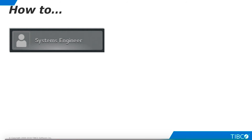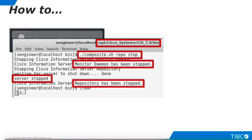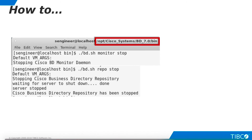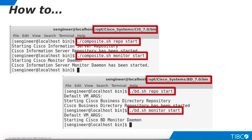Both TDV server and Business Directory are now installed. However, even though both components are running, they may not be able to synchronize with each other yet. To ensure synchronization, we'll do a one-time restart of the services. You must log in as a non-root user to do this. Navigate to the TDV server's bin directory and run the stop script. Verify that monitor, server, and repository services have been stopped. To stop Business Directory services, navigate to its directory and run those scripts. Then start TDV and Business Directory services by navigating to the appropriate directories and running the start scripts shown here.